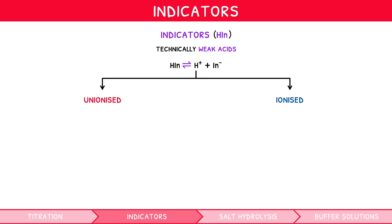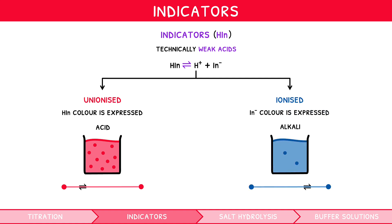Thus, when in the presence of an acid, when equilibrium shifts left, the HIn color is expressed more. Then, in the presence of an alkali, when equilibrium shifts right, the In⁻ color is expressed more.